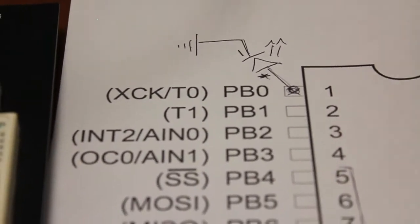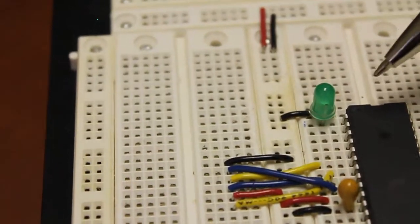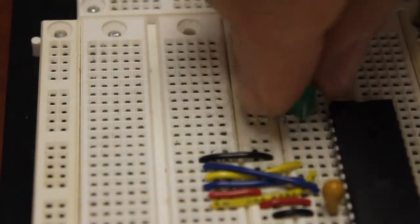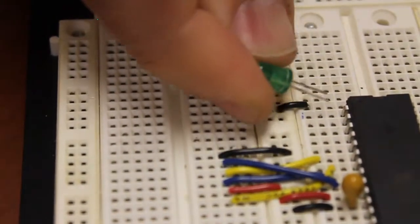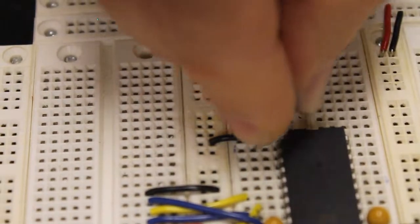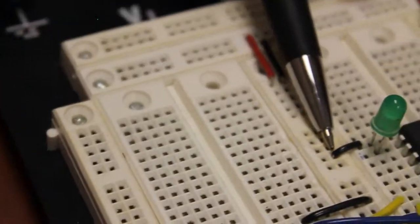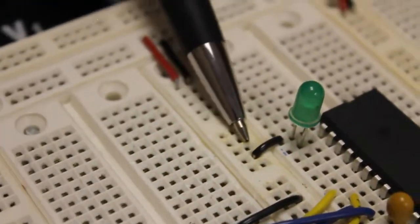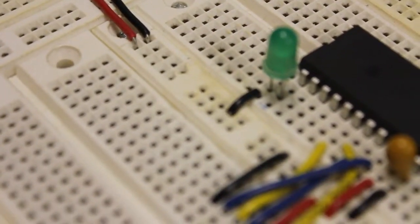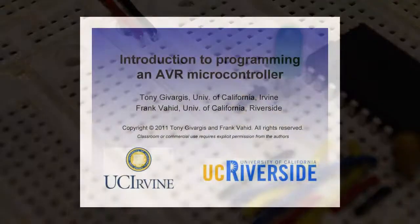So going back to my breadboard, as you can see, the output pin number one connects to one side of the LED and the other side, the other pin of the LED jumps over and connects to my ground rail. There you go.